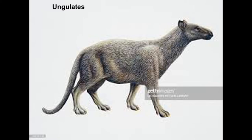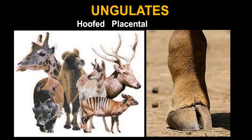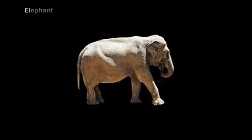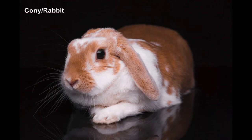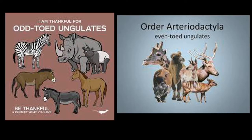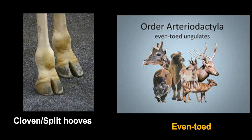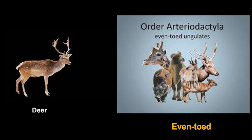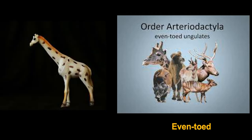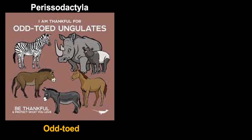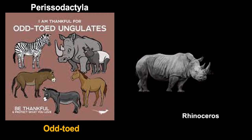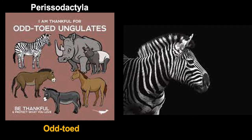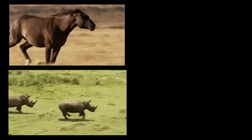Most of the herbivores that lived in the Tertiary Period were ungulates, meaning hoofed placental mammals. Present-day examples include the elephant, the horse, the coney (also called a rabbit), the hog, and all the ruminants. Ungulates are divided into two major groups: odd-toed and even-toed. Artiodactyls or even-toed ungulates have cloven or split hoofs — cattle, deer, pigs, camels, and giraffes are examples. The odd-toed ungulates, or perissodactyls, include horses, tapirs, and rhinoceroses. These animals are related even though they may not seem to resemble one another.